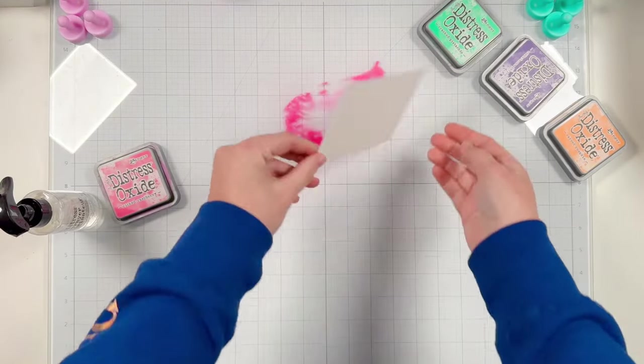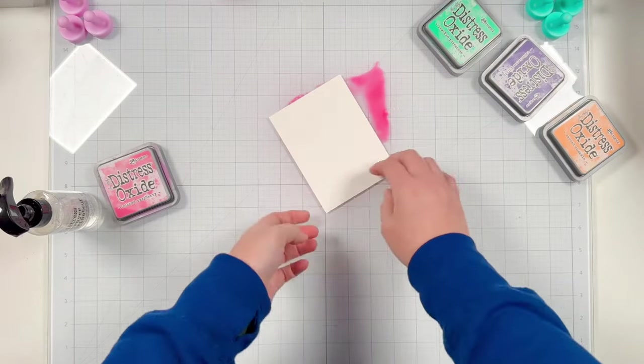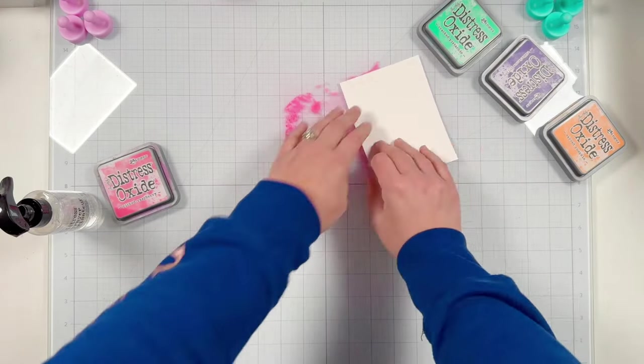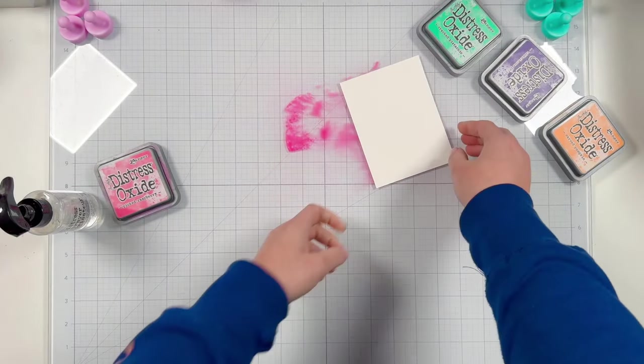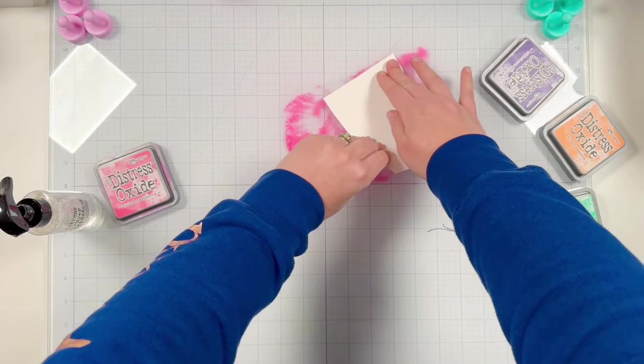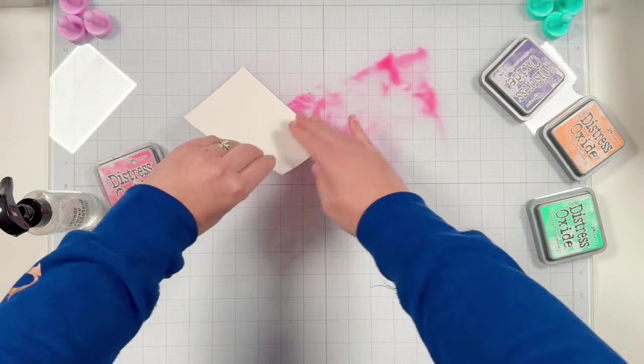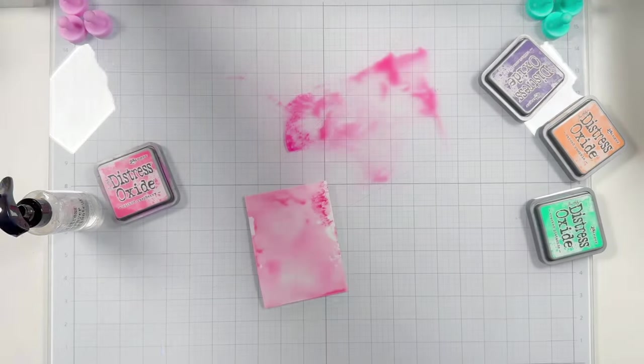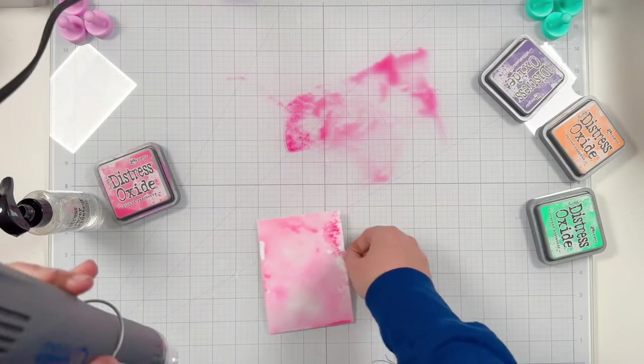I'm going to start by making my inky background by doing some ink smushing by adding distress oxides to my glass mat, spraying it with water, and then picking up that watery ink with my watercolor panel that I have cut down to four by five and a quarter.